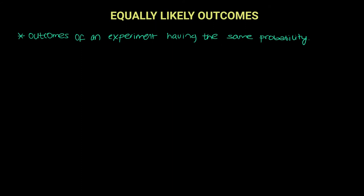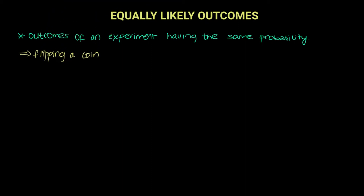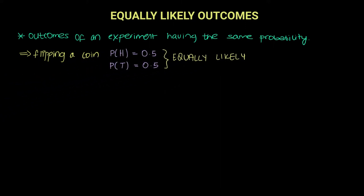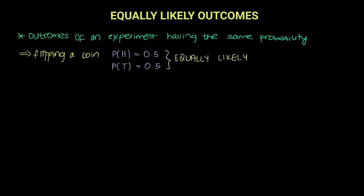Equally likely outcomes. What are equally likely outcomes? They are outcomes of an experiment having the same probability. For example, in the previous video, we were looking at the experiment of flipping a coin. And we saw that when we were flipping a coin, it could either land on a head or a tail. And we knew that they both had equally likely chances of landing on either.